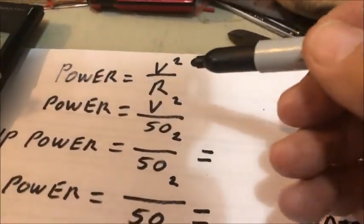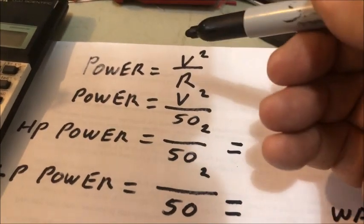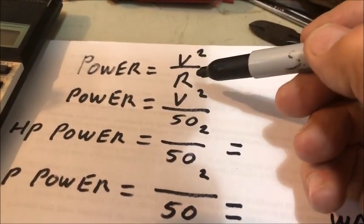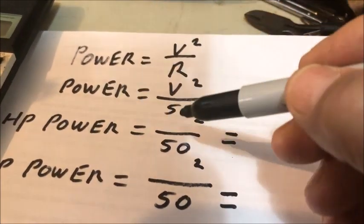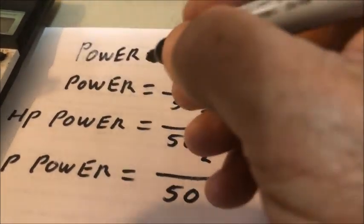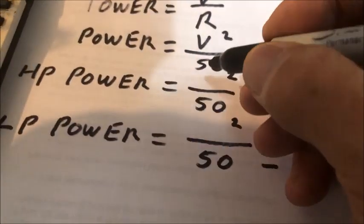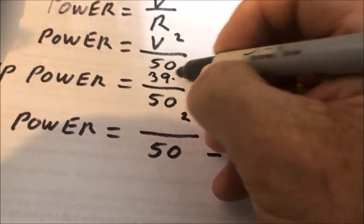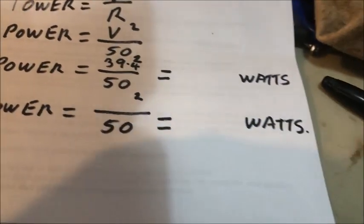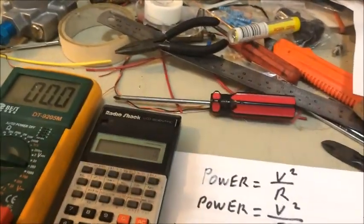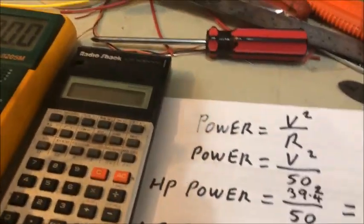And we've got our formula. The formula to do this is power equals voltage squared divided by the resistance. In this case, our resistance is our 50 ohm dummy load. So let's put in our reading that we just got, which was 39.4. And let's hit the calculator and see what sort of power output we're getting out of our transmitter.